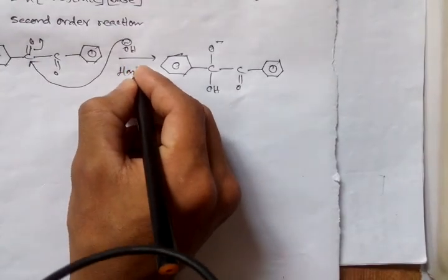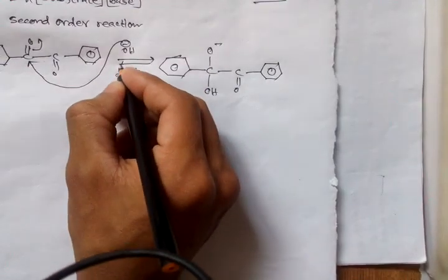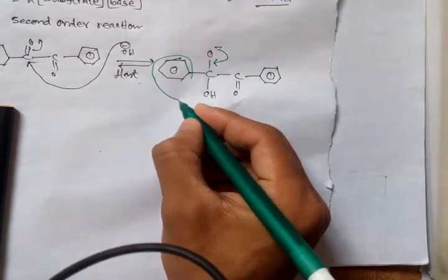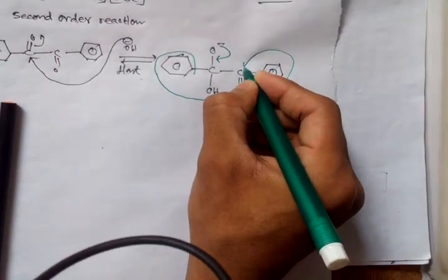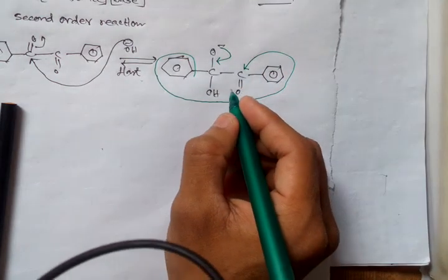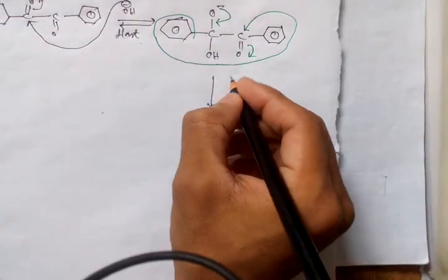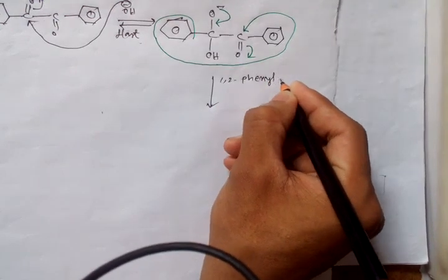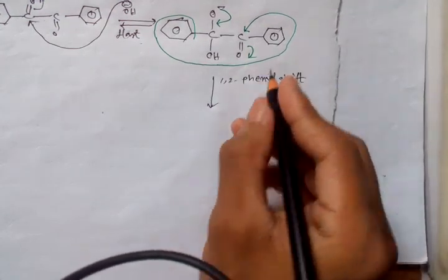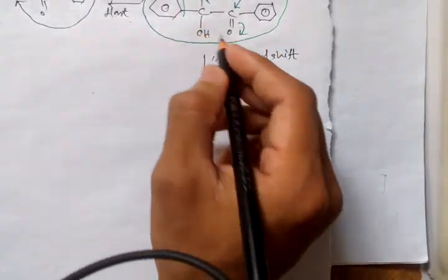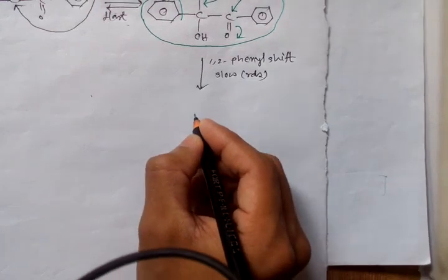This process is very fast and reversible — nucleophile attack on the carbonyl group. When this negative charge develops here, this ring attacks the carbonyl group; this is the shift of the phenyl group and this bond opens up. This is a very slow process — this is the rate-determining step — and this mechanism is called the benzyl benzylic acid rearrangement.